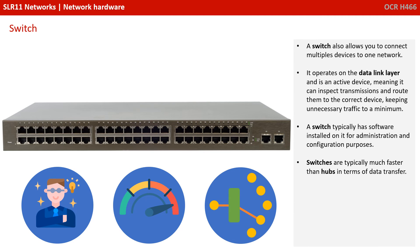A switch also allows you to connect multiple devices to a network, much like a hub. It operates on the data link layer, but it is an active device, meaning it can inspect transmissions and route them to the correct device, keeping unnecessary traffic to a minimum. A switch typically has software installed on it for administration and configuration purposes. Switches are typically much faster than hubs in terms of data transfer and have largely replaced hubs in all organisations in use today.